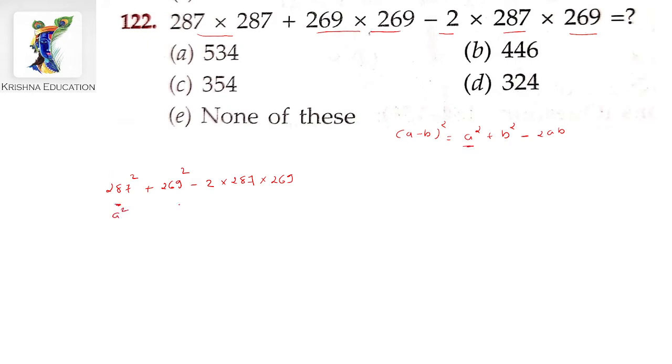We have a squared plus b squared minus 2ab. This equals a minus b squared. So this is equal to a minus b squared.